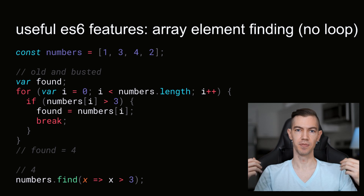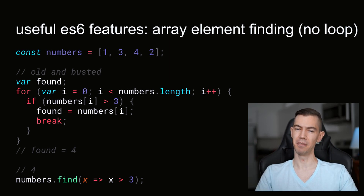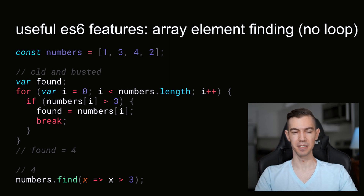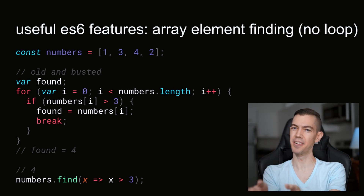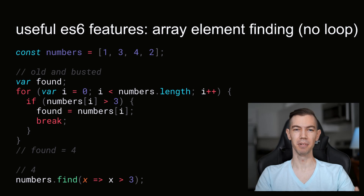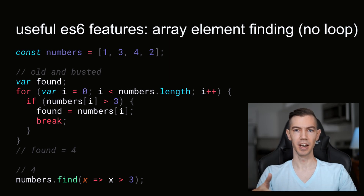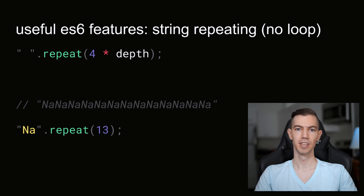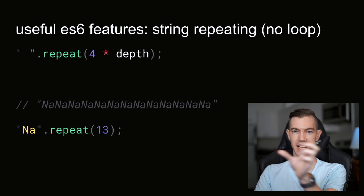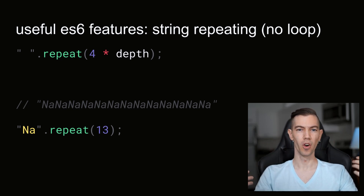The next feature is for finding elements within arrays. Chances are you may already be using this one without realizing it wasn't in the language that long ago — it seems like such a fundamental thing. This is the find function on an array: you give it a higher order function to tell it how to find, and it will bail out early as soon as it finds an element. This is convenient syntax for avoiding having to write a loop that terminates early. Another looping-related feature in ES6 is string repeat — not a lot of people know about this. You can use it for indentation if you want to add a certain number of spaces, or if you just want to repeat yourself a lot.